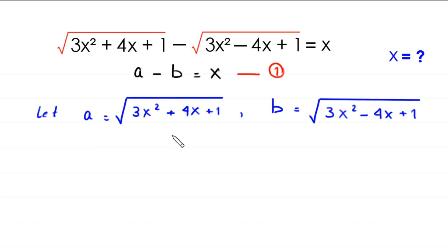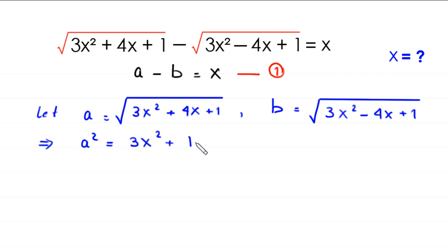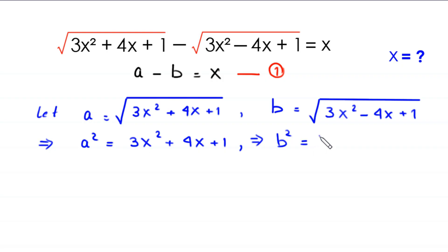Now if we square both sides of the first equation, this implies that a squared is equal to 3x squared plus 4 times x plus 1. And if we square both sides of the second equation, this implies that b squared is equal to 3x squared minus 4 times x plus 1.